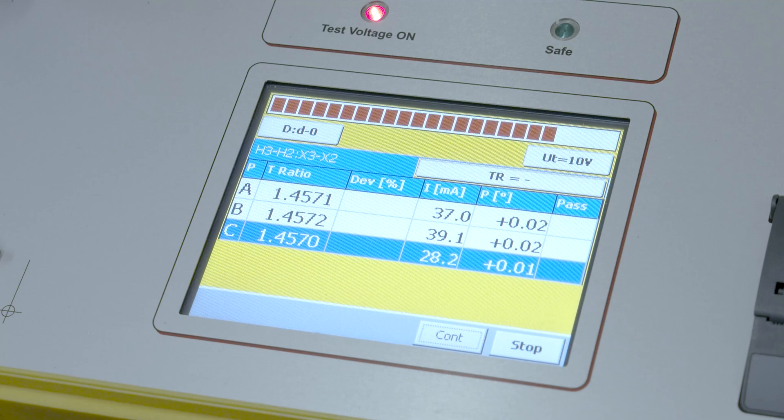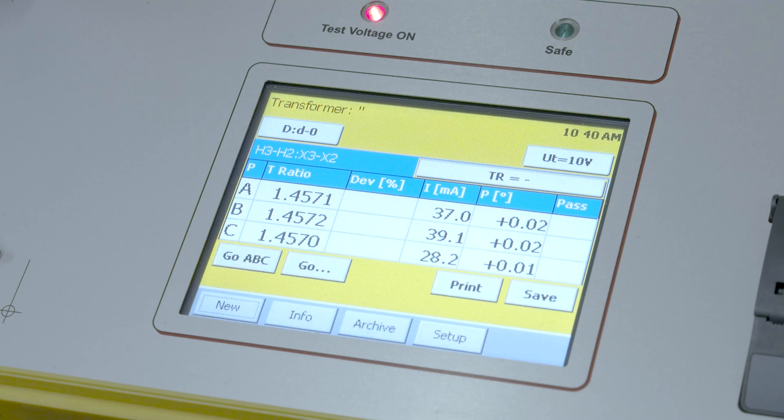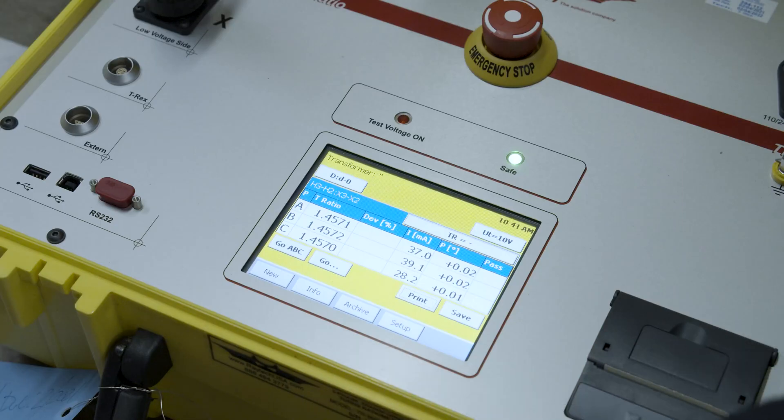Once we've gotten these test results notice that we've gotten to a safe indication on our test set meaning the test has been concluded. At this point we can do some other things. If we wanted to we can print the test results and you'll see that it prints those out to the side. This is one manufacturer's equipment.